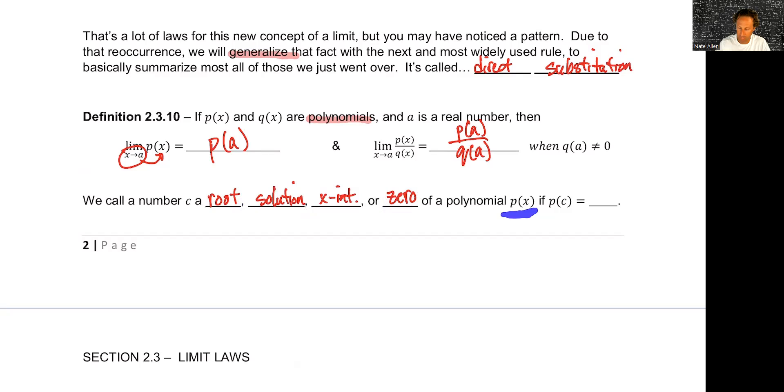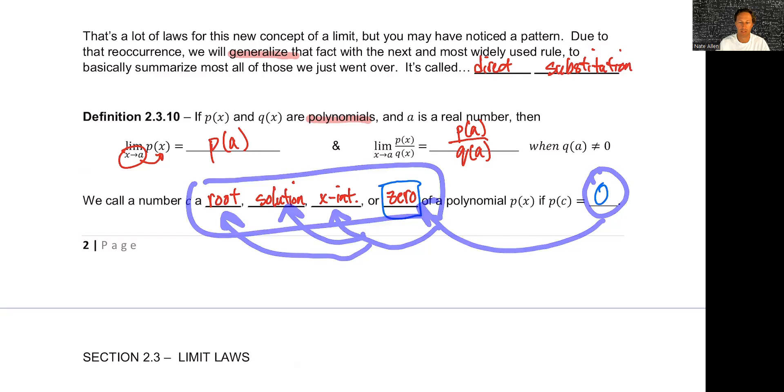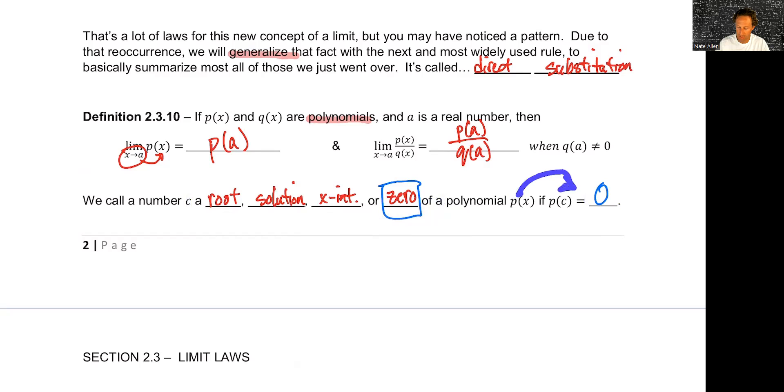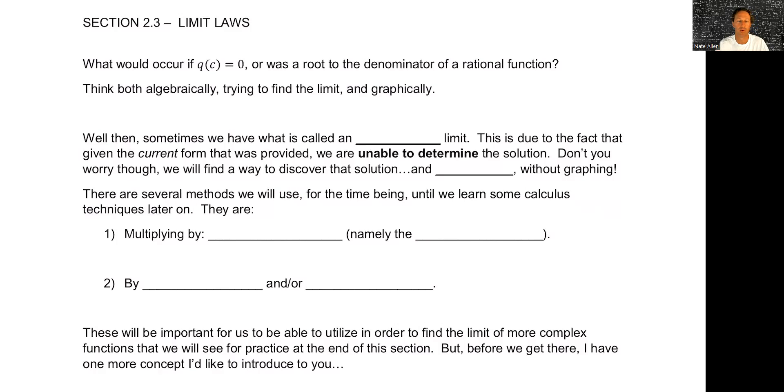But what about when we have a fraction where there's polynomials on top and polynomials on bottom? Well there can be issues. As long as we don't have that zero in the denominator, then it also holds true. So we can write that as P of A over Q of A. So we call that number C, a root, solution, X intercept, or zero of our polynomial. If the polynomial that we're given, P of X we're calling it, when we plug in that constant, some number, whole number, positive, negative, fraction, what would it have to be equal to? You should know by now. That would be setting our polynomial equal to zero, which is where our Y values would cross through our X intercept, which is also called a root or solution. So any of these terms, if you are asked to find that, you simply just set it equal to zero and find that value or values.